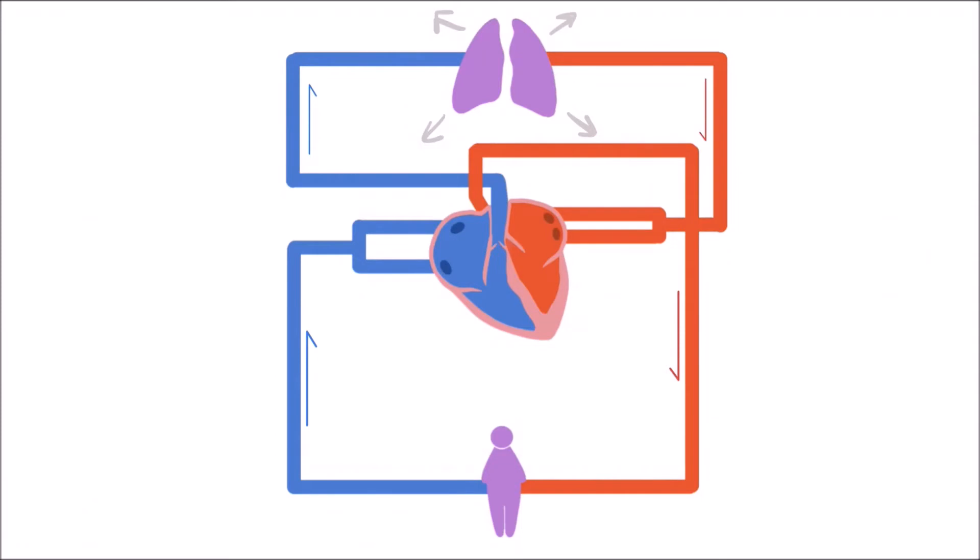Just like your lungs, this decrease in pressure creates a vacuum which can pull in air, or in this case, blood. This causes an increase in blood returning to the heart from the systemic circuit.